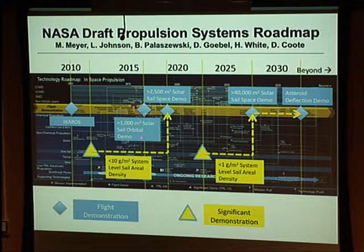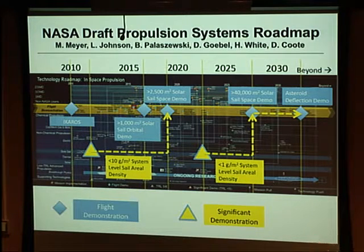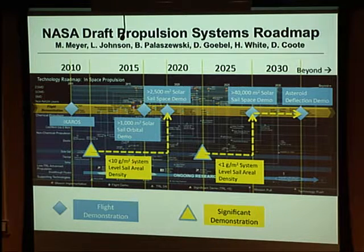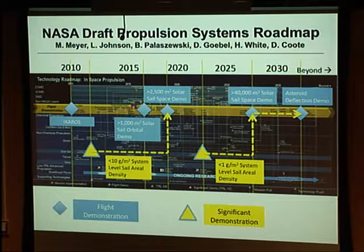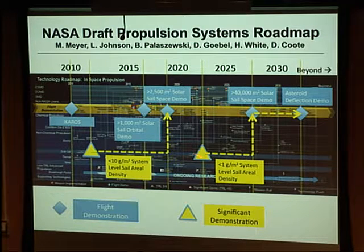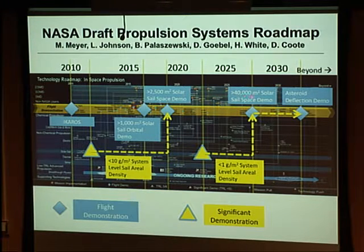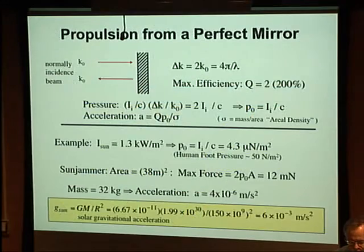NASA is good about making roadmaps. The highlights include starting with a thousand square meter solar sail demonstration. Beyond the area, what's important is the areal density — the mass per unit area. With polyimide sails they're hoping to reach around 10 grams per square meter. In the future they hope to get below one gram per square meter. The thinner and less massive you can make these, the bigger you can make them and the faster they go. Eventually they want to get up to 40,000 square meters to do unique types of missions.